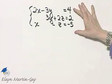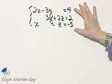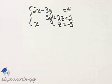Notice I have a system here of three equations in three unknowns, so we will pick any two equations and eliminate a variable.